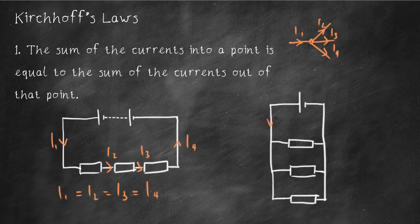For parallel circuits, however, I1 you can see splits into I2, into I3, into I4. So we say I1 equals I2 plus I3 plus I4. Easy peasy.